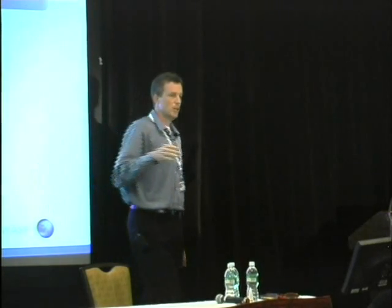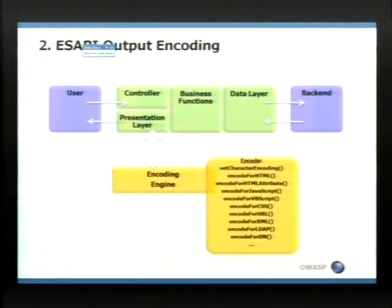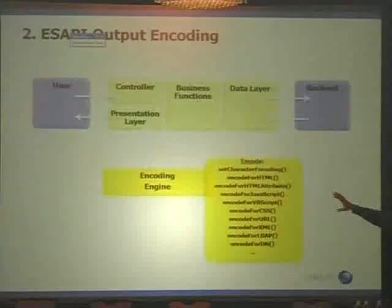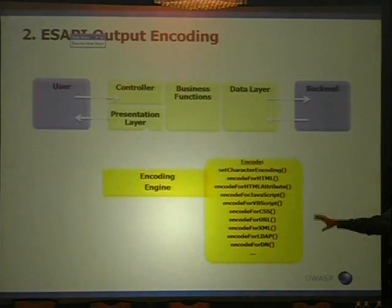There are also encoders for other things — encoders for SQL, encoders for LDAP, encoders for other back-end systems that you need to encode output for. So the idea here is that we can prevent all injection attacks using the encoder. Someone pointed out that you can encode for different operating systems. In Windows there's one escape character, in Unix there's a different one. So now we have encode-for-execution built into ESAPI as well, if you're calling the native operating system.